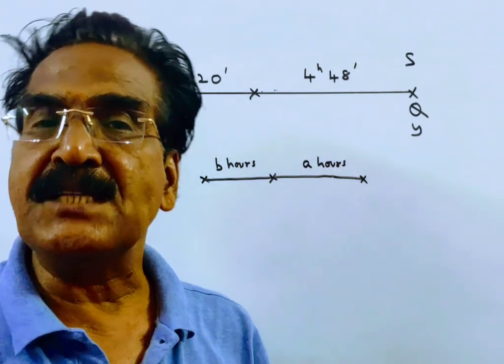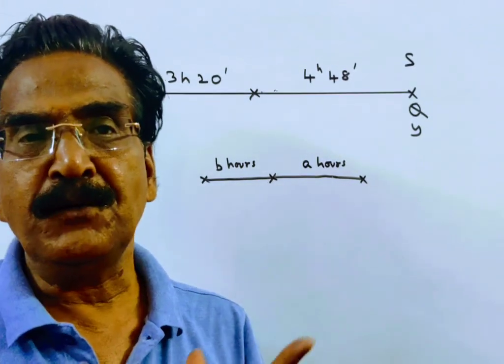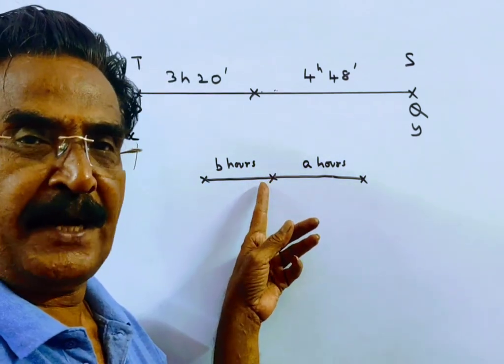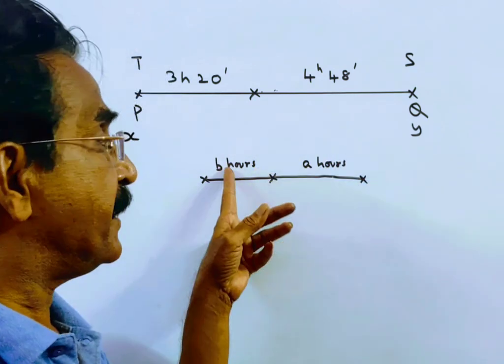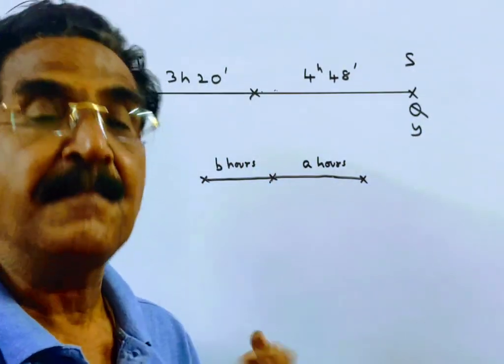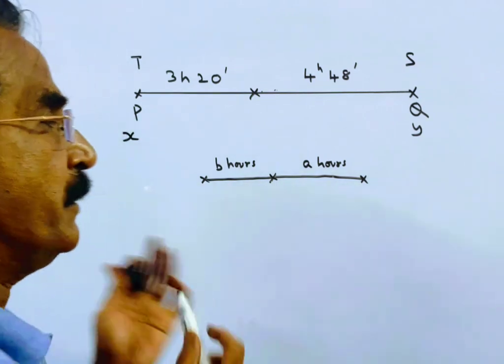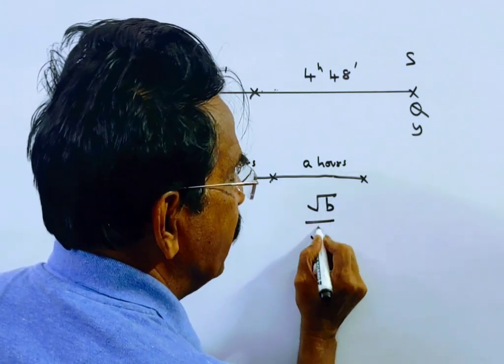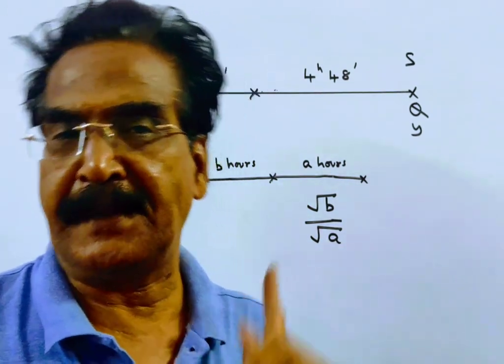If the speed of train P is 45 kmh, what is the speed of train Q? We know one important ratio: if two trains meet at a certain point and after meeting, if they take A hours and B hours to reach the other ends, that means to reach the destinations, the ratio of the speeds is root B to root A. The ratio of the speeds is root B by root A.